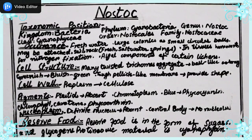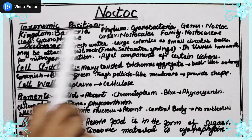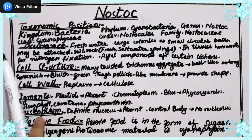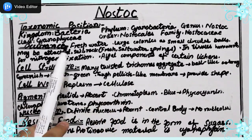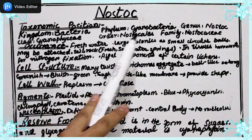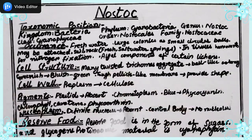The taxonomic position of Nostoc: the kingdom is Bacteria, phylum is Cyanobacteria, class is Cyanophyceae, order is Nostocales, family is Nostocaceae, and genus is Nostoc. Within the genus Nostoc, there are many species.